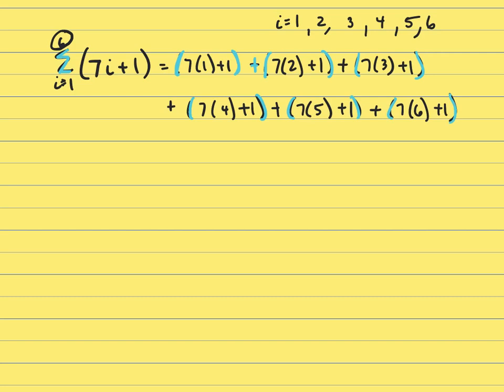Now, let's go back and do what's inside our parentheses. And that would be 7 times 1 is 7 plus 1 is 8. So that's going to be 8 plus, that's 15, 22, 29. 7 times 5 is 35 plus 1 is 36, plus 42 plus 1 is 43.